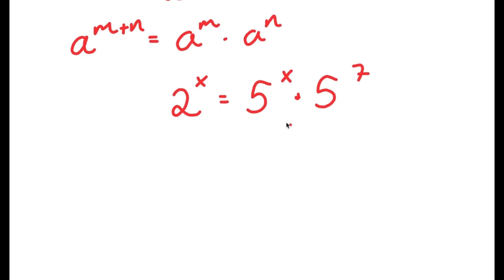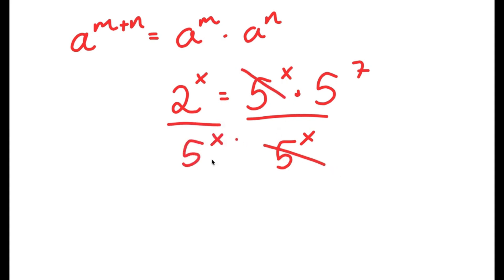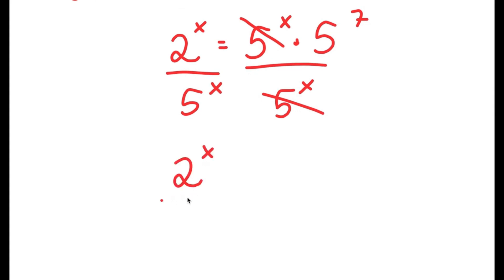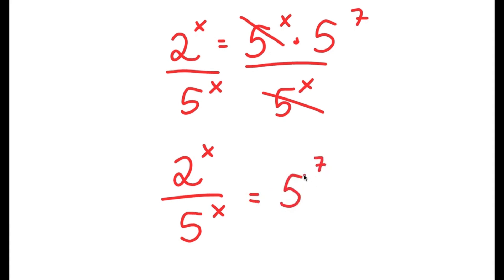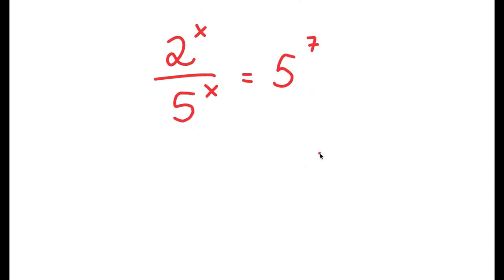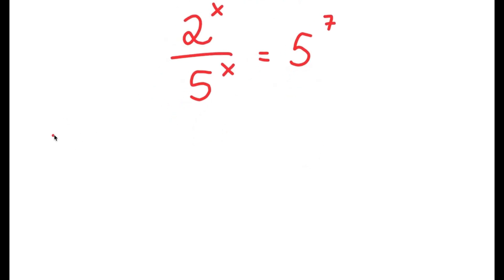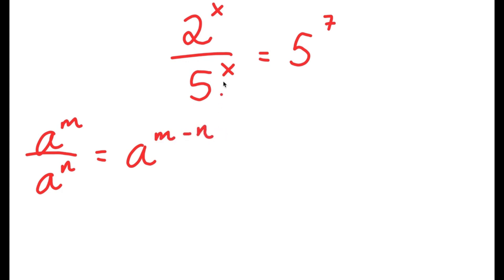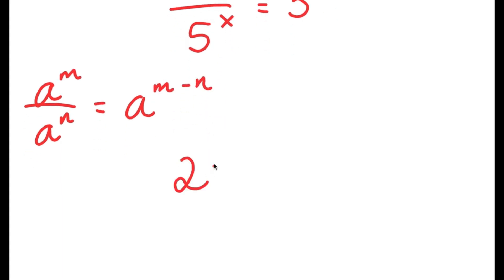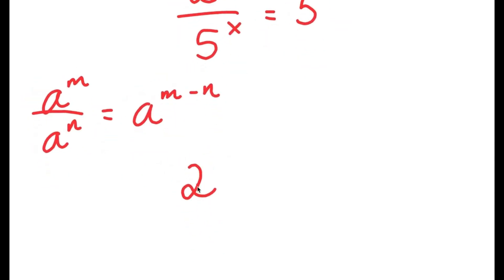From here, I'm going to divide both sides by 5 to the power of x. These two cancel out, and I get 2 to the power of x over 5 to the power of x is equal to 5 to the power of 7. Now an important property of exponents is that a to the power of m over a to the power of n is equal to a to the power of m minus n. So 2 to the power of x over 5 to the power of x is equal to 2 over 5 to the power of x.